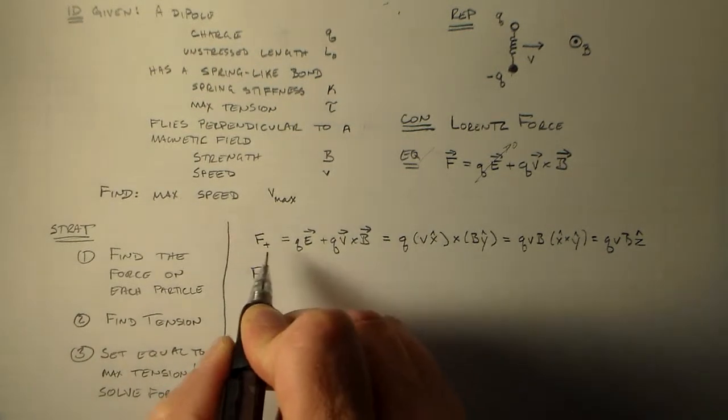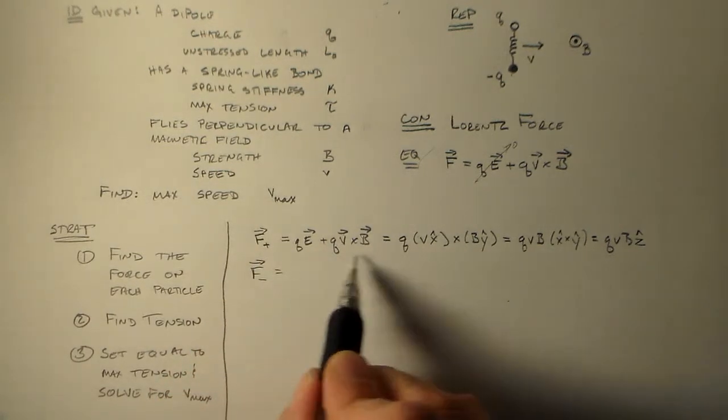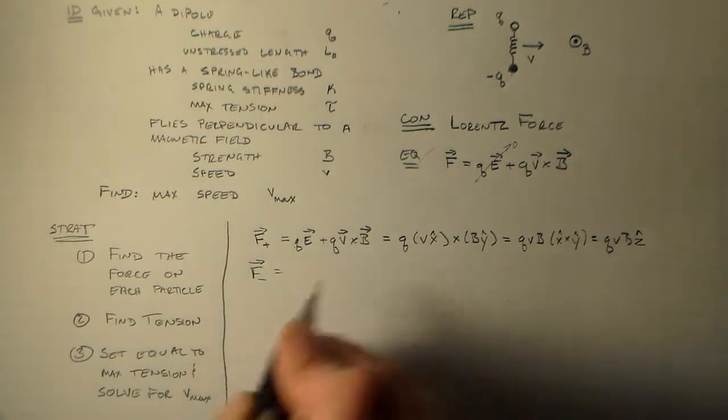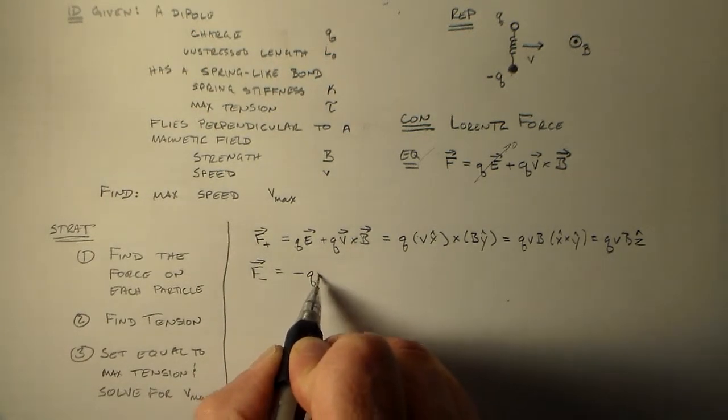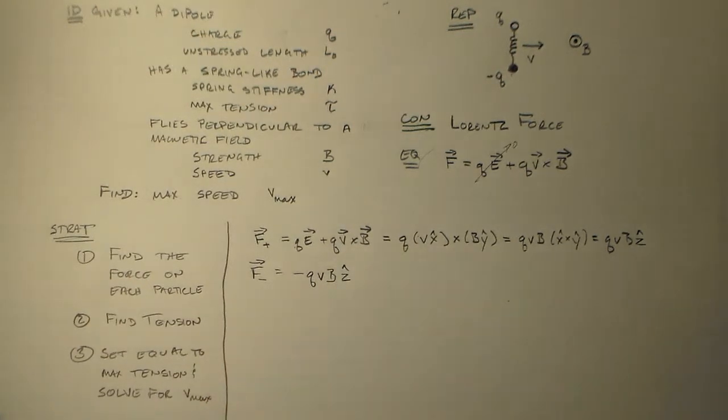All right. And so F minus, which is also a vector, is equal to the same thing, only this Q is negative. So we just add a negative sign to this result, and we have minus QVB Z hat.